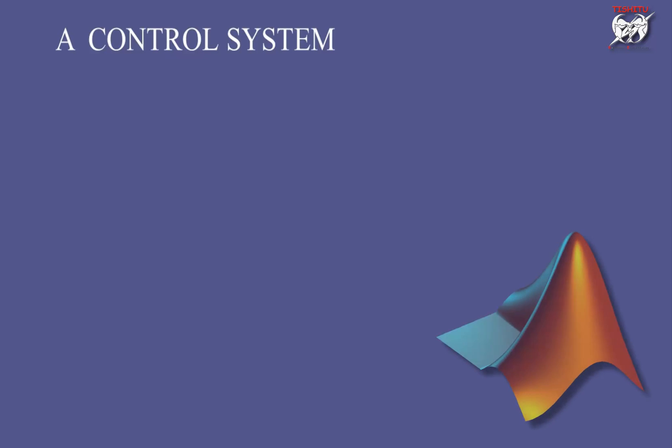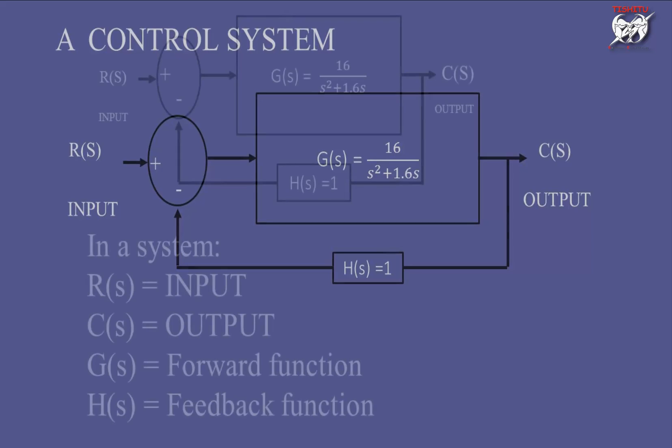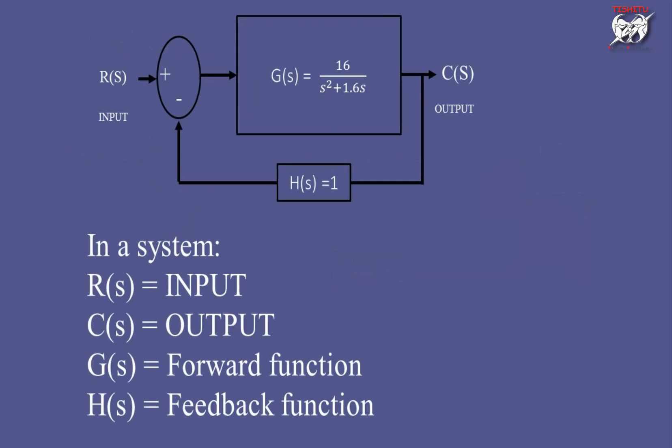Before that, we have to learn how to obtain a transfer function in MATLAB. For the same, we have to consider a typical mathematical model of any control system in S-domain. So this is a typical example of mathematical representation of a system. In a system, we have input, output, forward function, and feedback function as G(s) and H(s) respectively represented in figure.